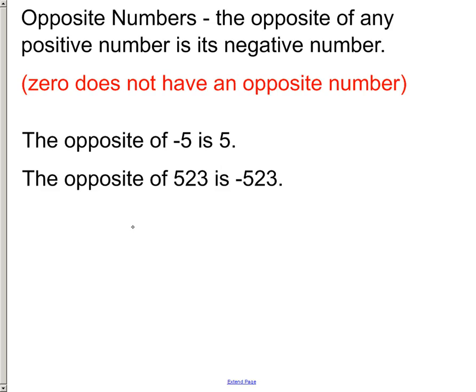Let's keep moving on though. Let's take a look at opposite numbers. Opposite numbers are basically just the opposite of any number out there. If you have a positive number the opposite is going to be its negative number. 0 is right in the middle though so there's no opposite number for 0. But the opposite of negative 5 is 5. The opposite of 523 is negative 523.